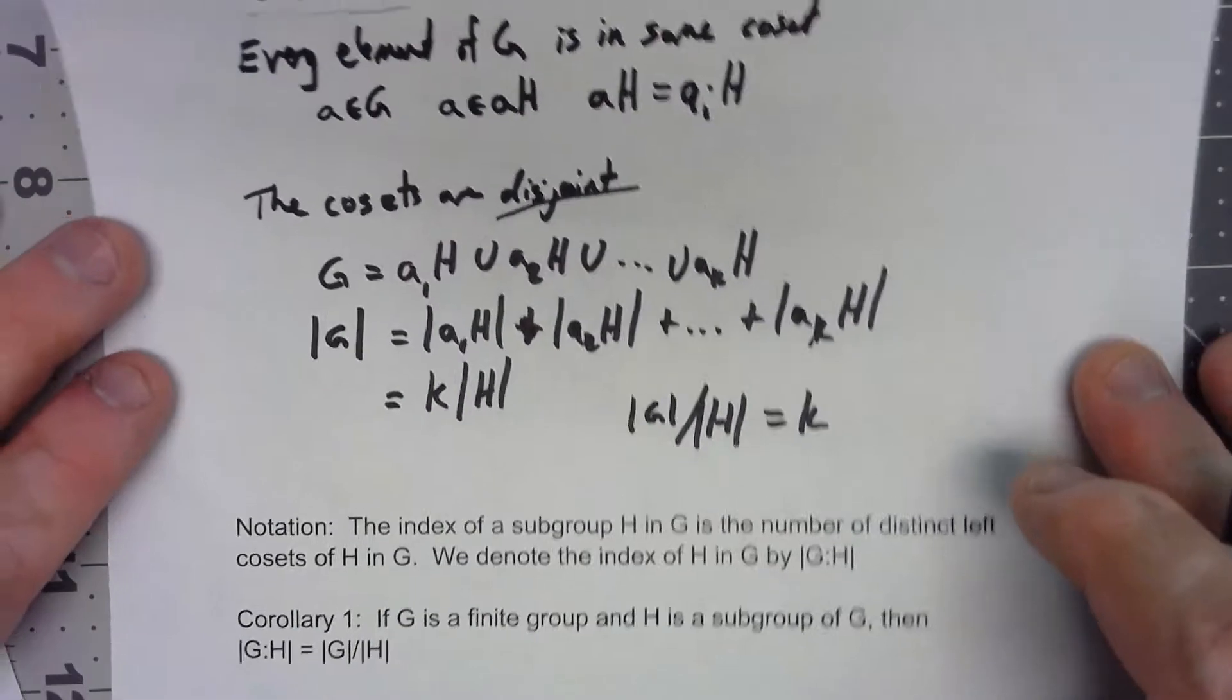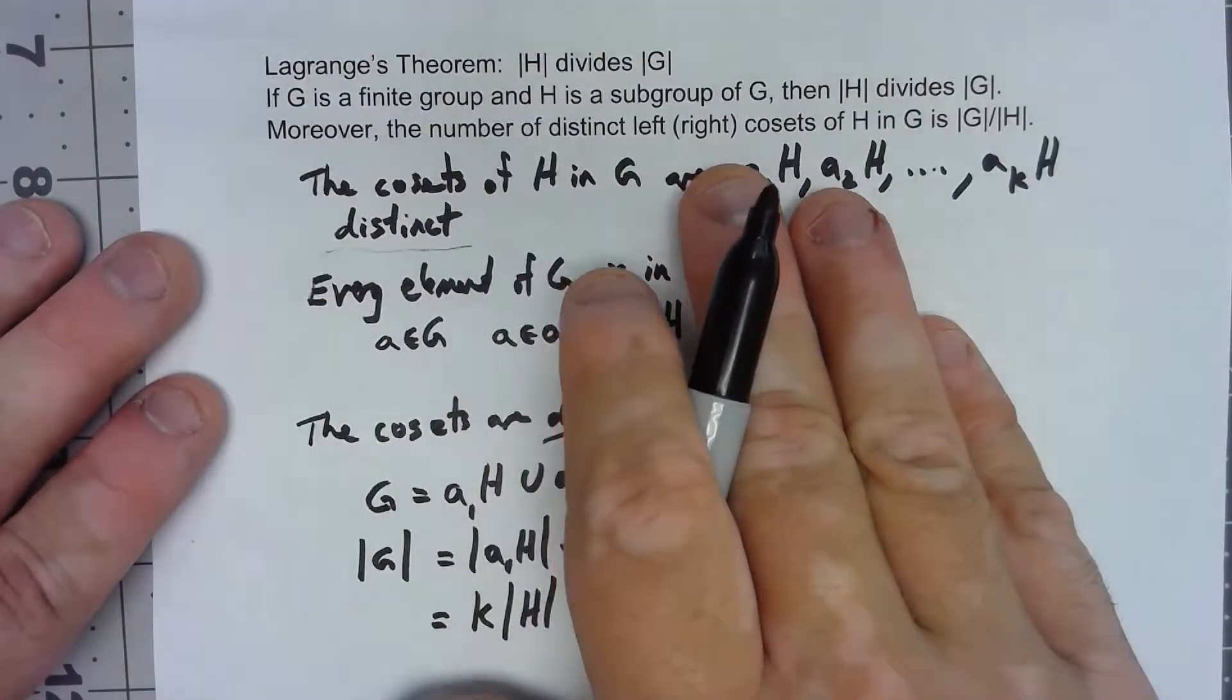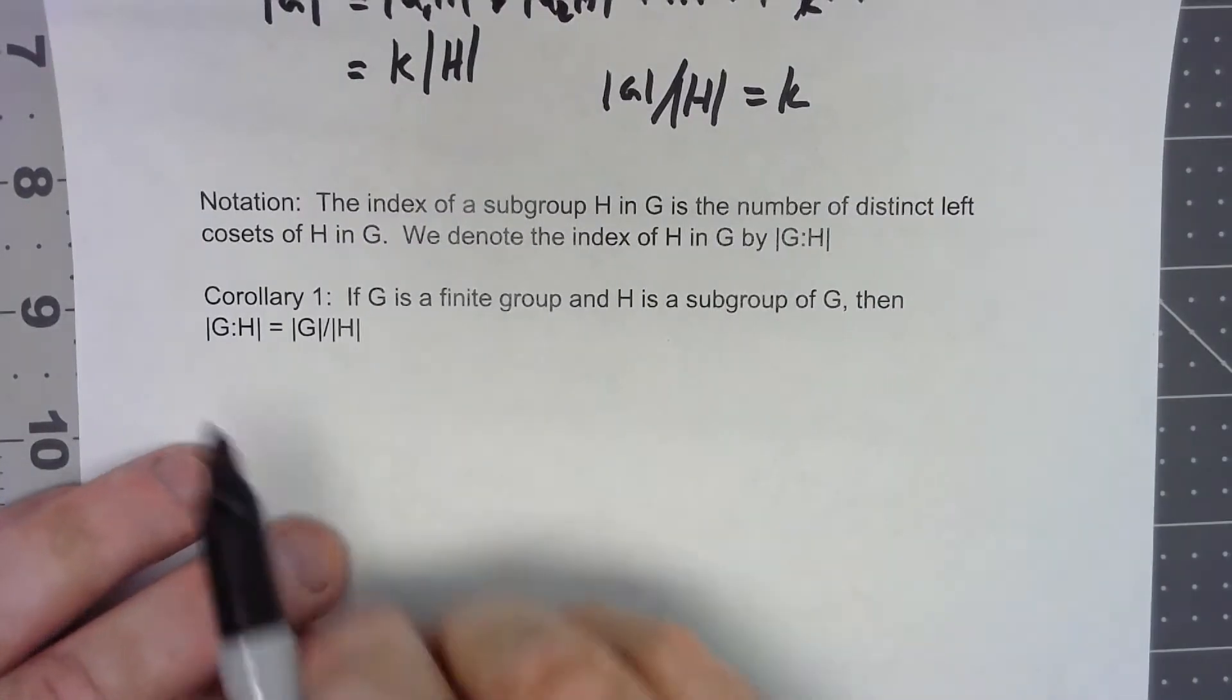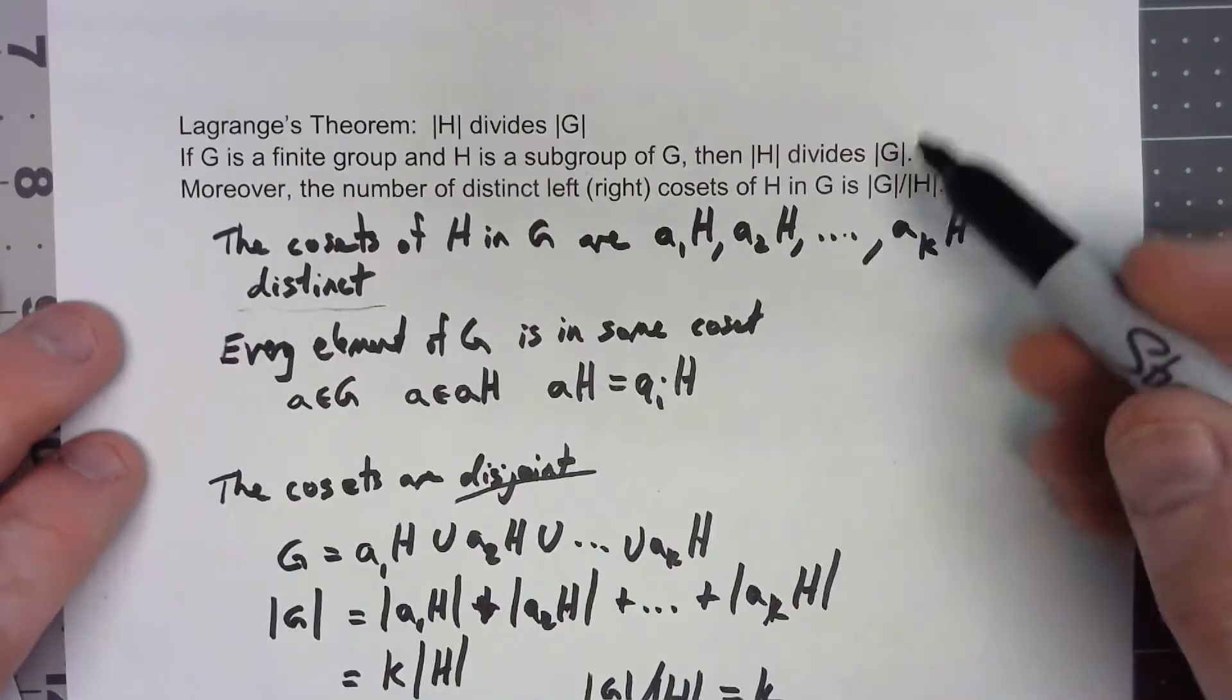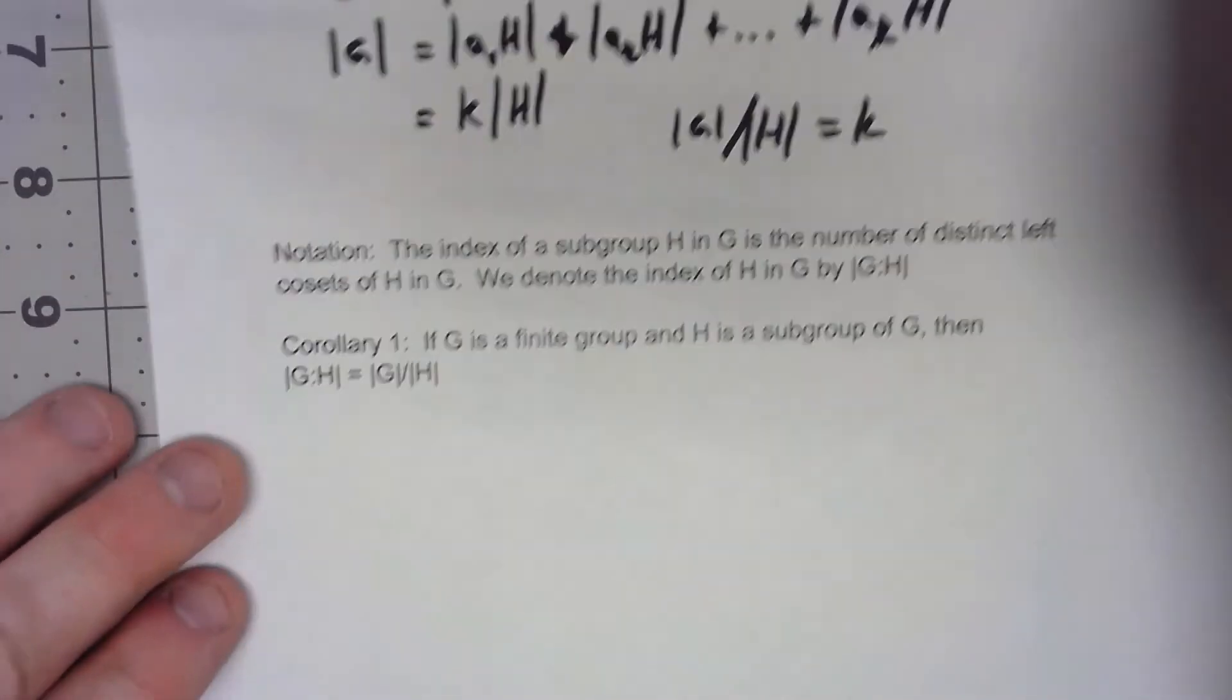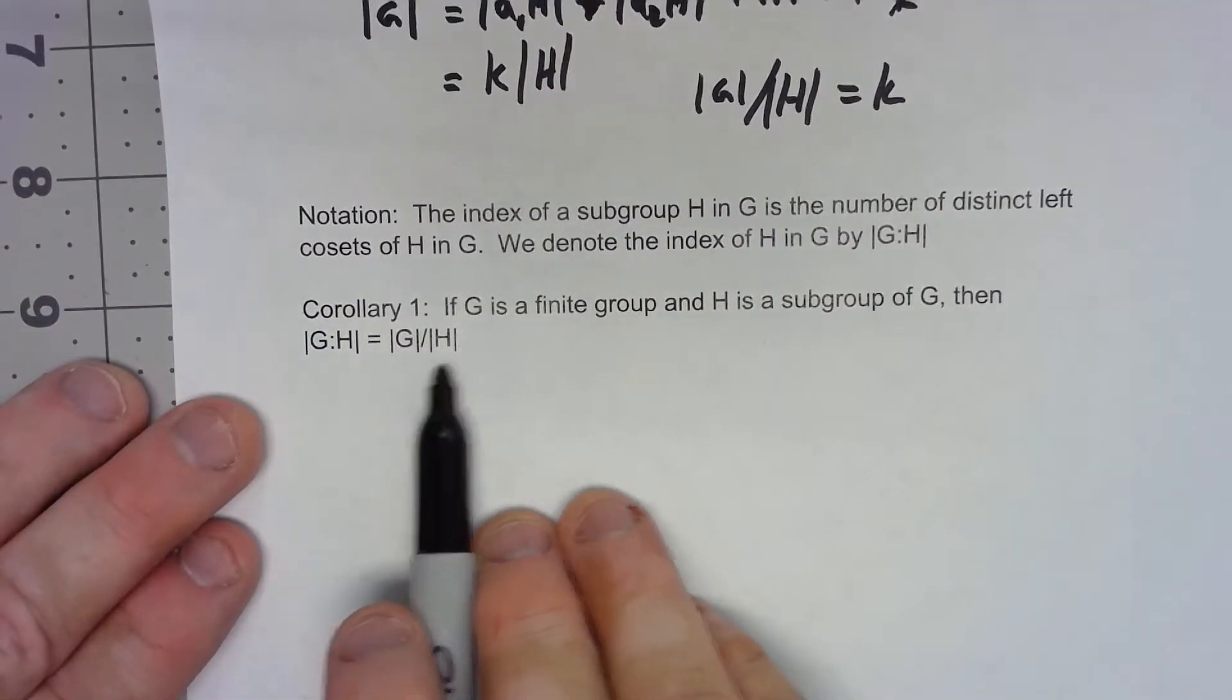Well, then we can kind of rephrase that last statement up here. The number of distinct left cosets of H in G, well that's what we just called this |G:H| thing, and we said that was equal to the order of G over the order of H. So the index of H in G is the order of G over the order of H.